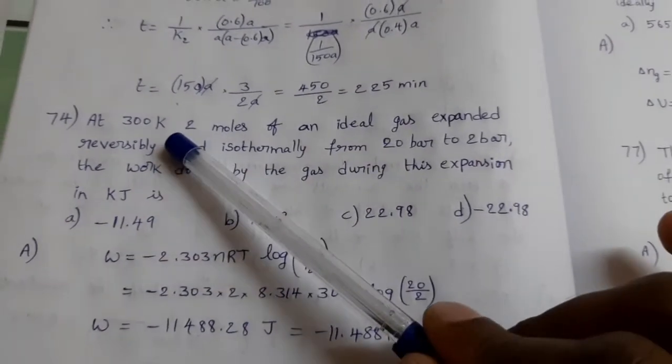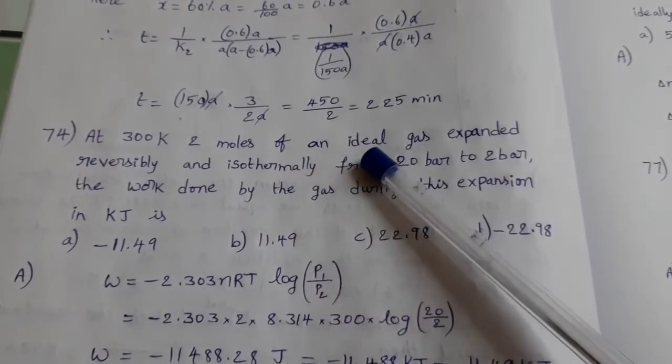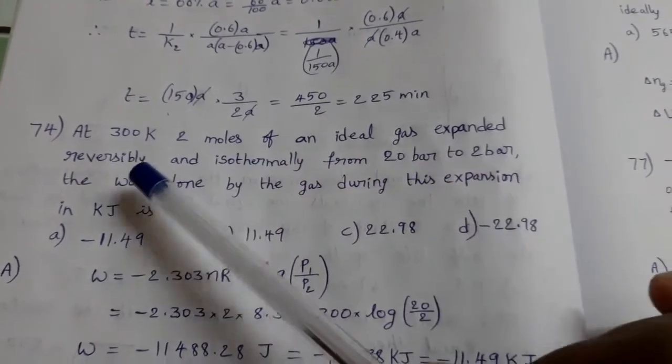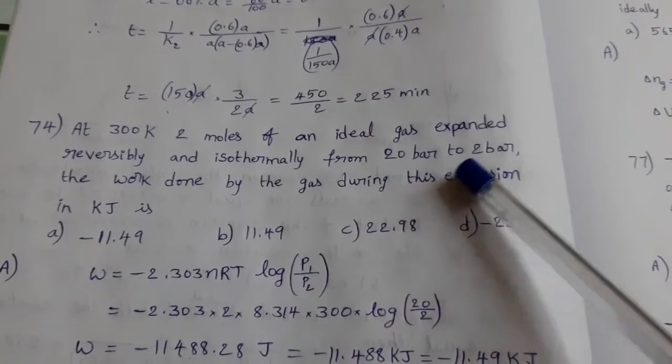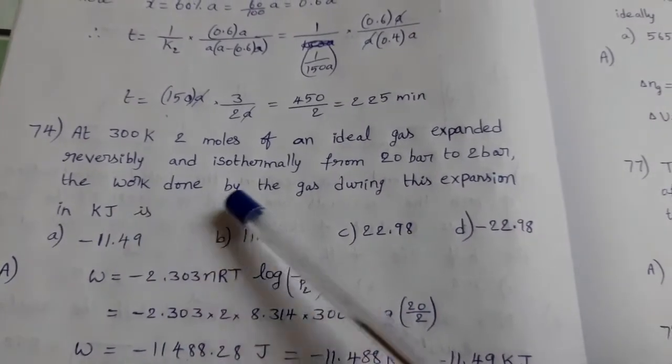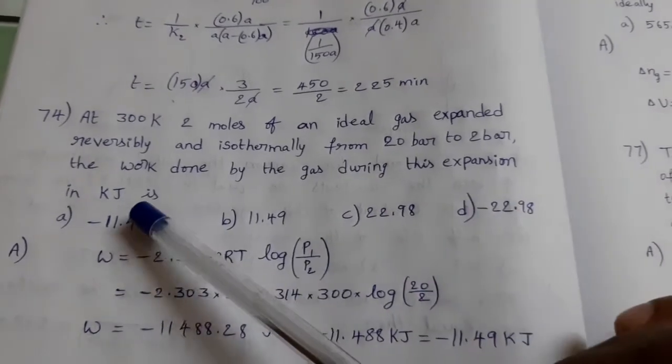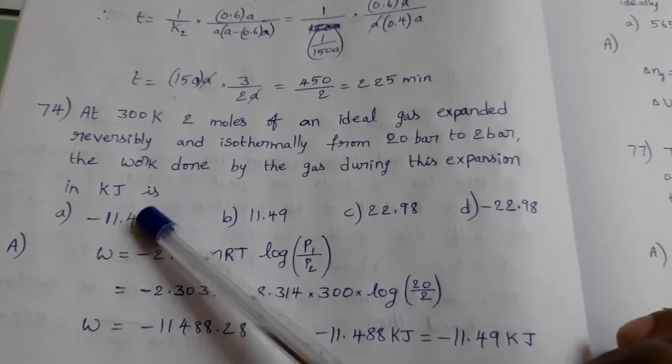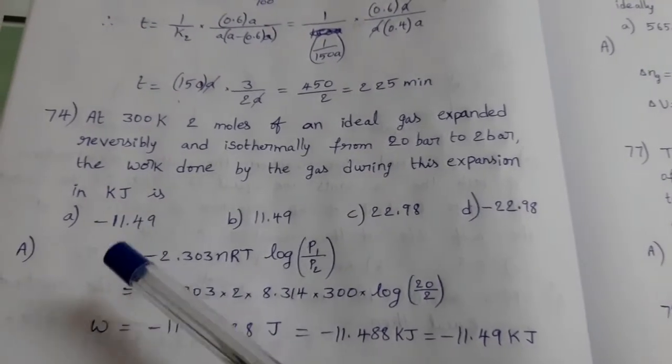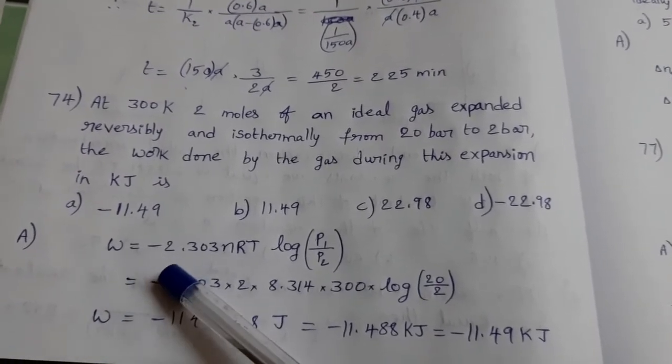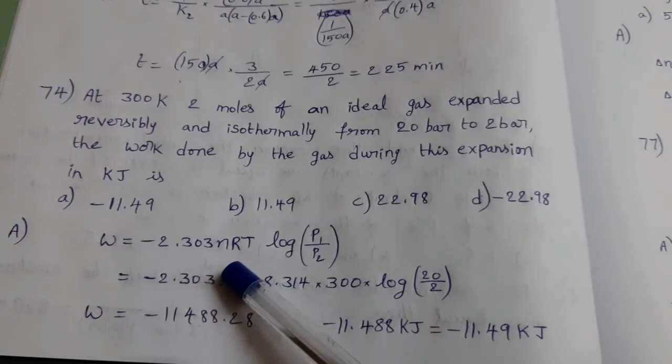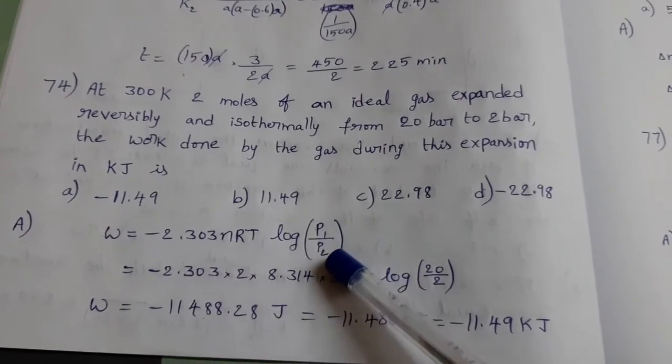At 300 Kelvin, 2 moles of an ideal gas expanded reversibly and isothermally from 20 bar to 2 bar. The work done by the gas during this expansion in kilojoules is. For this suitable formula: w = -2.303nRT log(P1/P2).